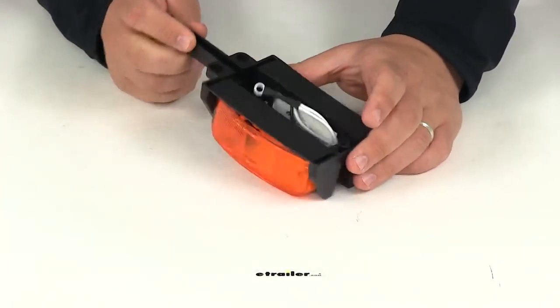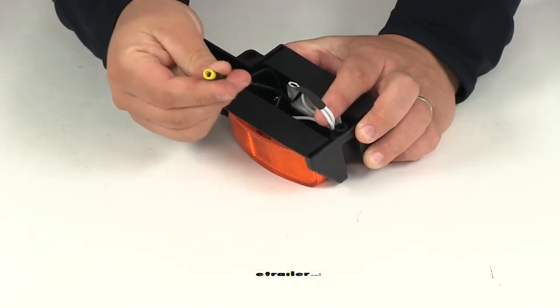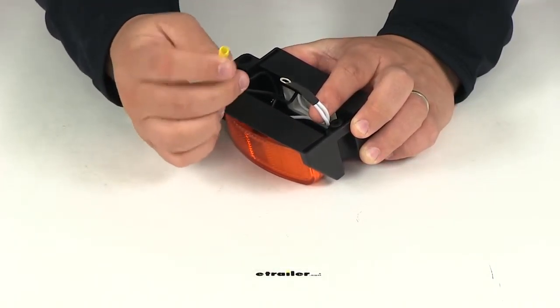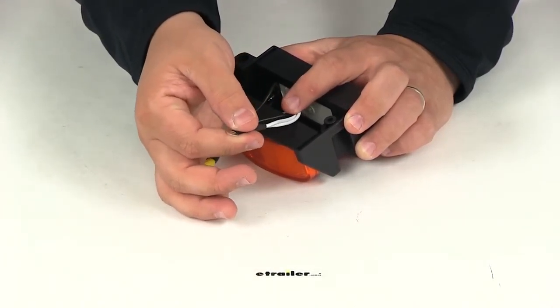The lights are pre-wired, providing your power and ground connections. You can see right here for the power, we have the buck connector right there. And then for the ground, we have the white wires with the ring terminal.